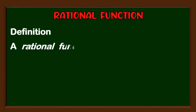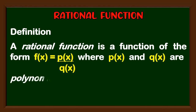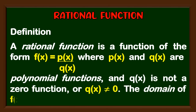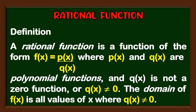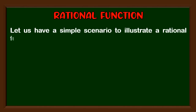A rational function is a function of the form f(x) = p(x) / q(x), where p(x) and q(x) are polynomial functions and q(x) is not a zero function, or q(x) is not equal to zero. The domain of f(x) is all values of x where q(x) is not equal to zero. Let us have a simple scenario to illustrate a rational function.